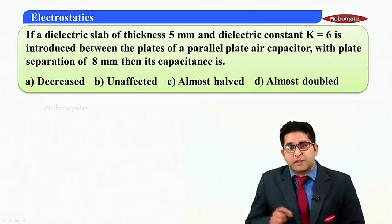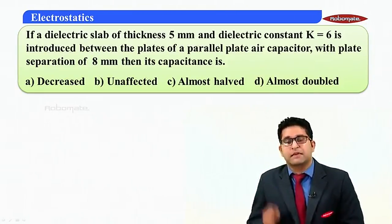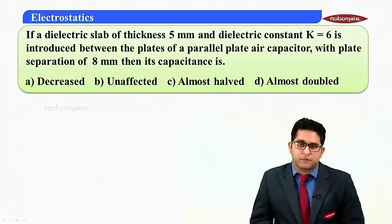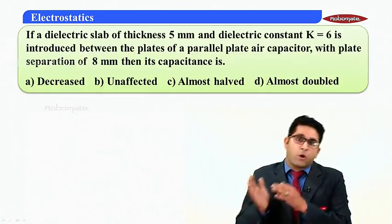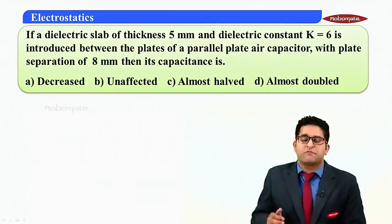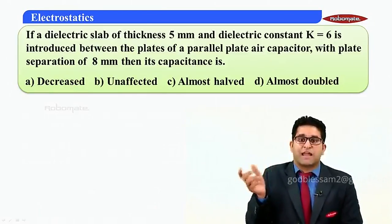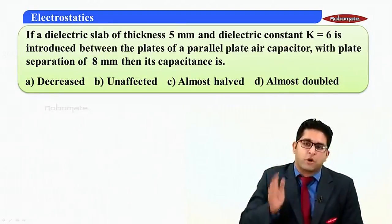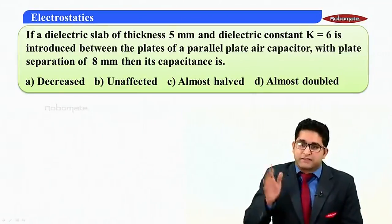The second question says: if a dielectric slab of thickness 5 mm and dielectric constant K equal to 6 is introduced between the plates of a parallel plate air capacitor with plate separation 8 mm, then the capacitance is — option A: decreased, option B: unaffected, option C: almost half, option D: almost double. As we learned, inserting a dielectric always increases capacitance, so options A, B, and C are incorrect; the correct answer is option D — almost double.